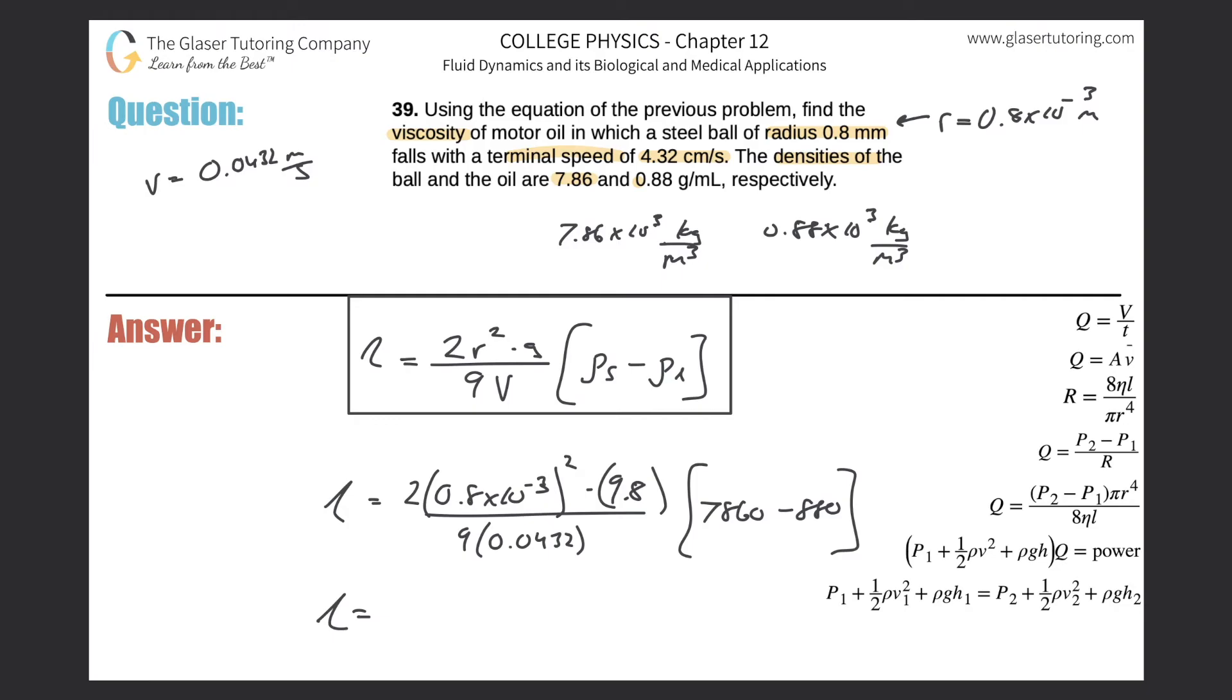One more time. So 2 times 0.8 times 10 to the minus 3 squared, and be careful, times 9.8, divided then by parenthesis 9 times 0.0432. We get that value. And then we're going to take that and multiply it now by the 7,860 minus then 880.